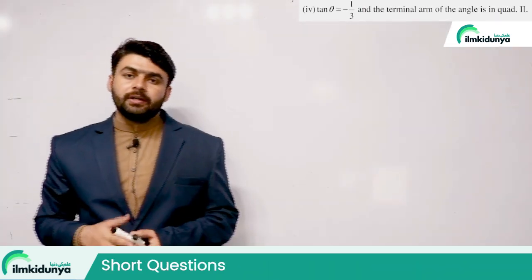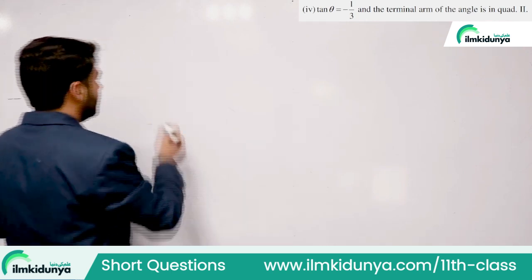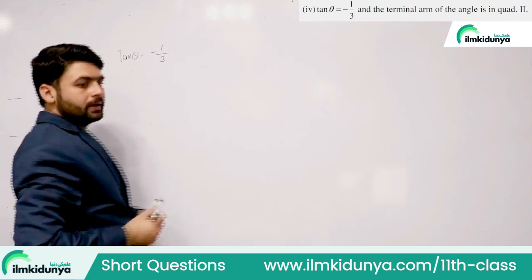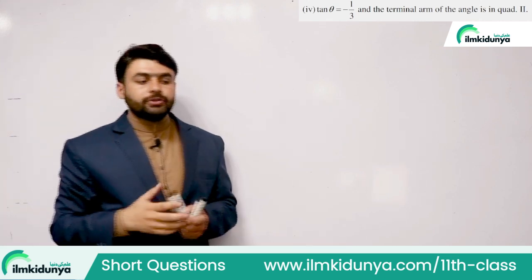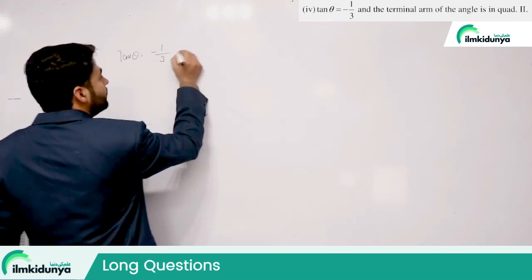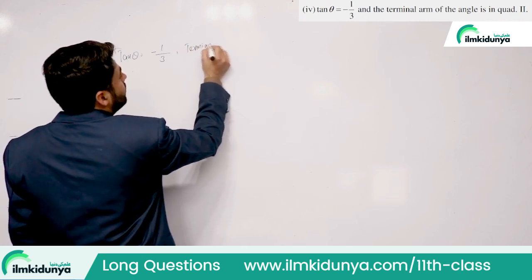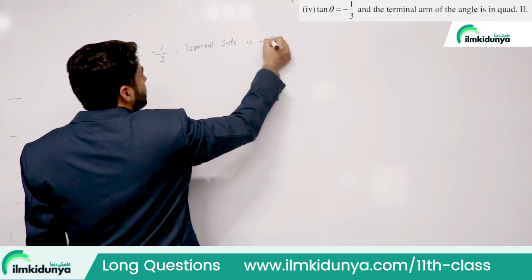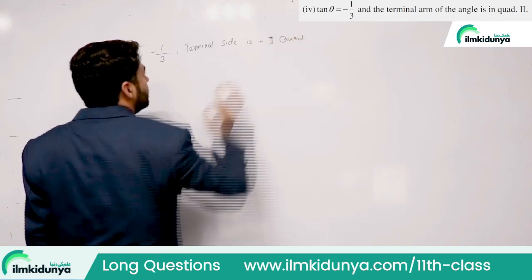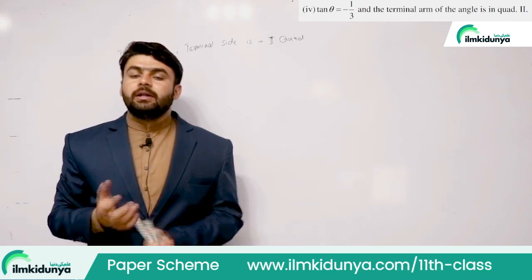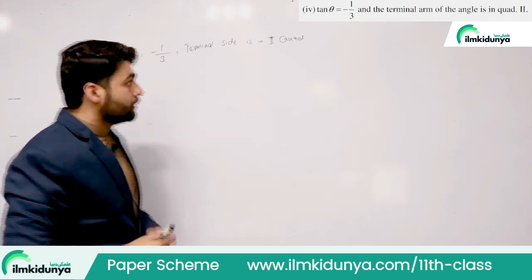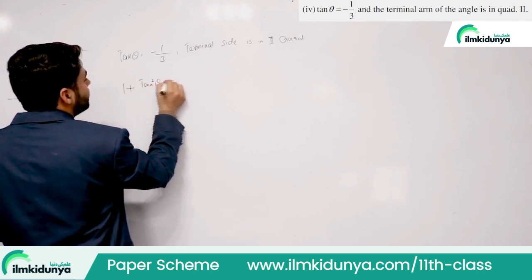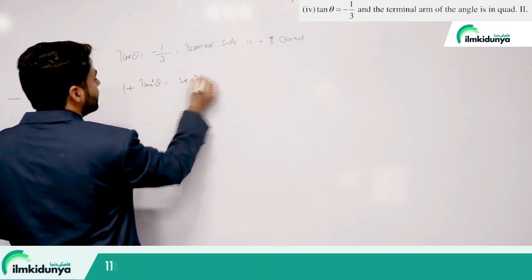Next question: tan θ = −1/3, and the terminal side is in the second quadrant. Here we can find secant using the identity 1 + tan²θ = sec²θ. Substituting values: 1 + (−1/3)² = sec²θ.